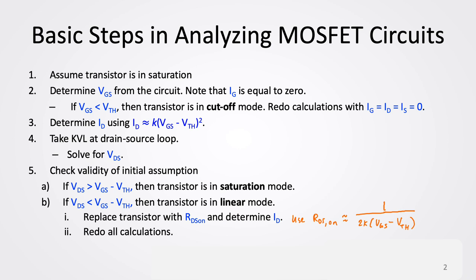After assuming that the transistor is in saturation, we determine VGS from the circuit. When we're determining VGS, we note that the gate current is zero. If after determining VGS we compute VGS to be less than the threshold voltage, then that implies the transistor is in cut-off mode. Therefore, you should redo calculations, setting all currents equal to zero.